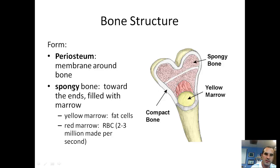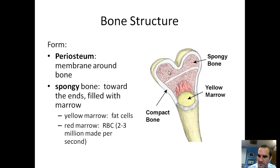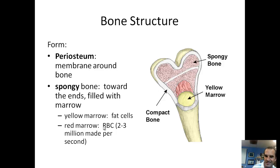After that you've got spongy bone, which is towards the end of the bone and is filled with bone marrow. Spongy bone is not the hard part that gives bone its dense support. It has yellow and red marrow — yellow marrow is responsible for making fat cells, and red marrow makes red blood cells. It can make two to three million every second in a healthy body.